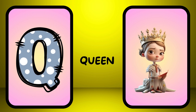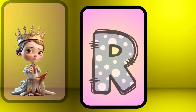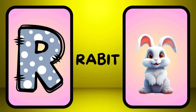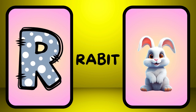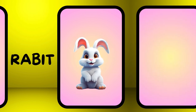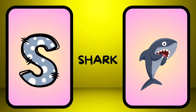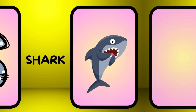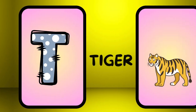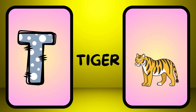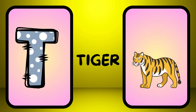Q is for queen, qu-qu-queen. R is for rabbit, r-r-rabbit. S is for shark, s-s-shark. T is for tiger, t-t-tiger.